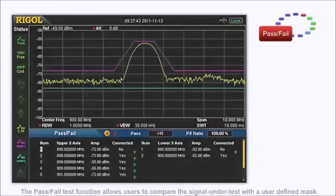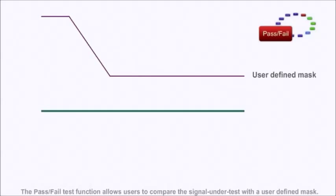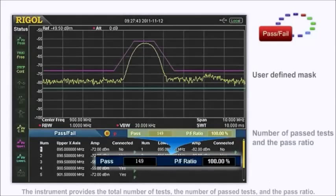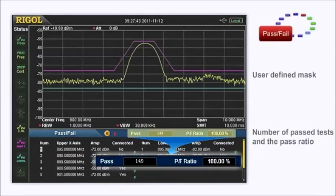The pass-fail test function allows users to compare the signal under test with a user-defined mask. The instrument provides the total number of tests, the number of pass tests, and the pass ratio.